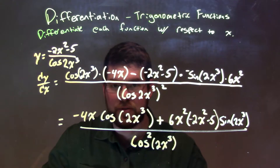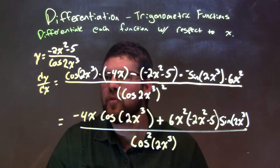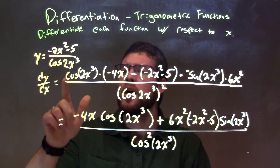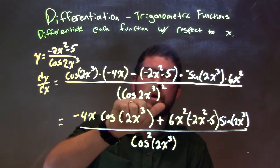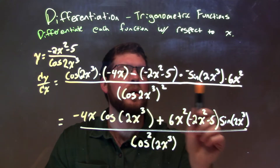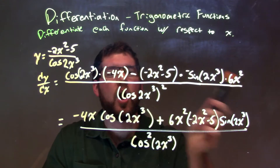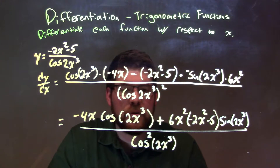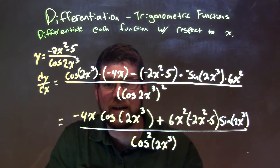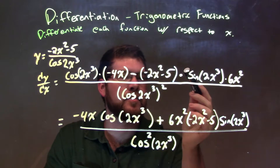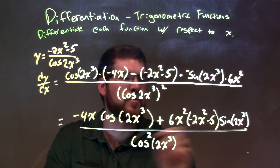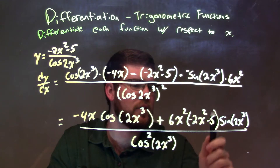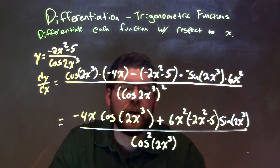So let's recap. We were given y equals negative 2x squared minus 5 over cosine of 2x to the third power. We applied the quotient rule and the chain rule: the denominator times the derivative of the numerator, minus the numerator times the derivative of the denominator, all over the denominator squared. After simplification, the final answer is negative 4x cosine of 2x to the third power plus 6x squared times negative 2x squared minus 5 times sine of 2x to the third power, all over cosine squared of 2x to the third power.